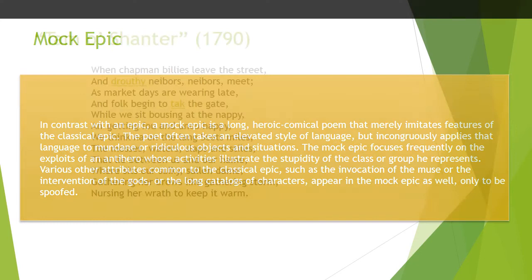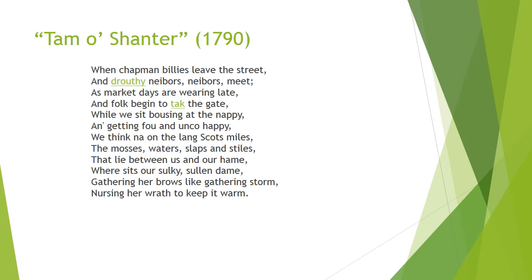I'm not going to read Tam O'Shanter because it's rather long, but I want to point out key things. It may be a little difficult at first to read because of the Scottish dialect, but I did provide some of the key words on the side of each of these slides. If you read them out loud, it's not as difficult because you start realizing it sounds a lot like the word it really means — like 'tak' sounds like 'take,' and 'e'en' sounds like 'even,' and so forth.